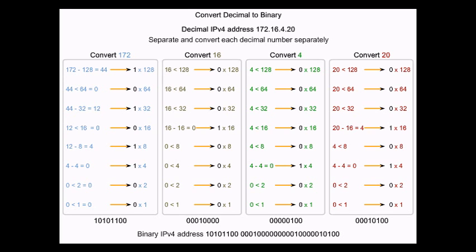The same number, 172.16.4.20, as you can see here, 172, so 172 minus 128 equals 44. Then automatically, we put a number 1 there. 44, it's smaller than 64, so put a 0. So 44, it's greater than 32, so we subtract, then we put number 1. See?